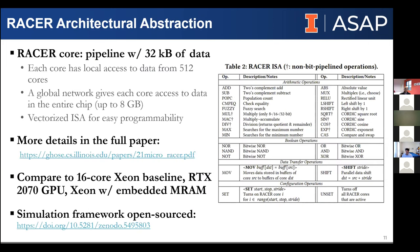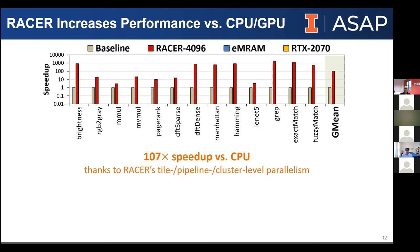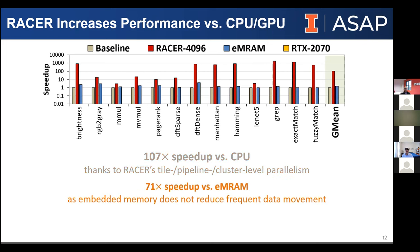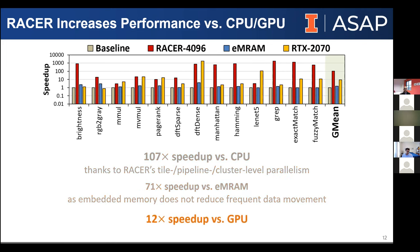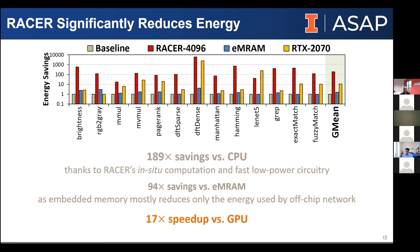We use back-end-of-line integration to overlap the arrays with the actual logic to amortize the footprint. We can stamp out however many clusters we want into a practical-to-fabricate architecture — a chip with a single cluster has two megabytes of memory, or we can scale all the way up to eight gigabytes within a four millimeter squared footprint, obeying thermal dissipation and power delivery limits. With RACER, we get 107x performance over a 16-core state-of-the-art Xeon CPU and 12x speedup over an RTX 2070 GPU, with revised results showing 187x CPU speedup, 189x energy savings over CPU, and 17x over GPU.